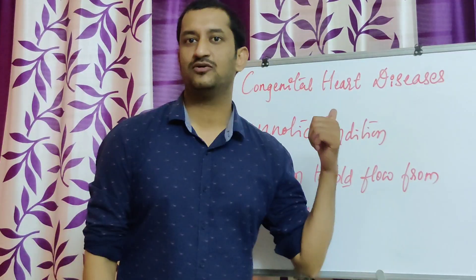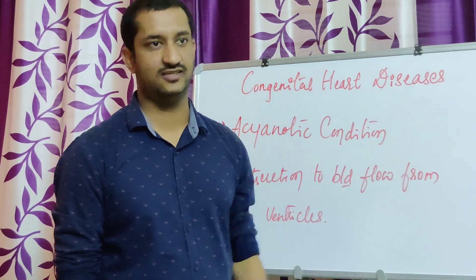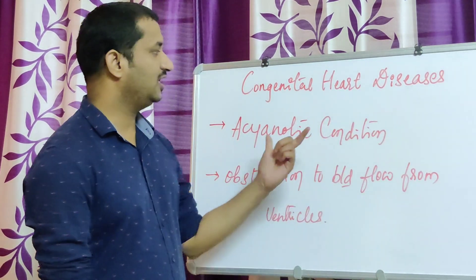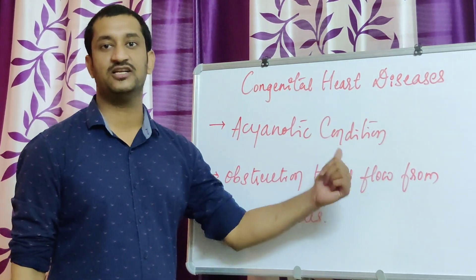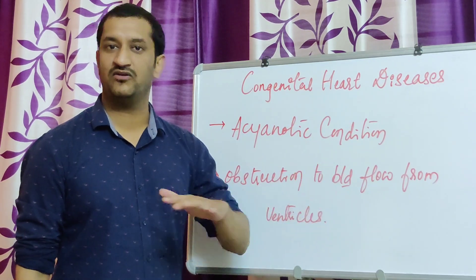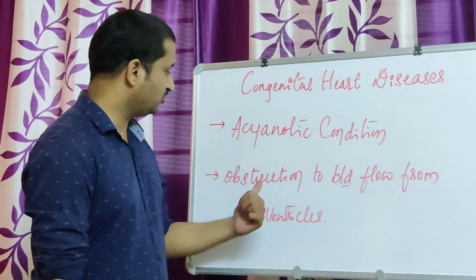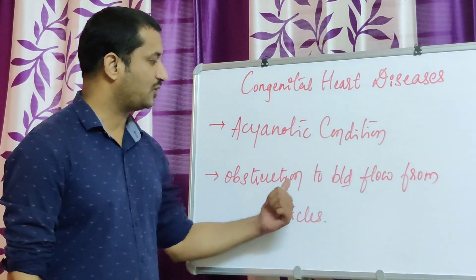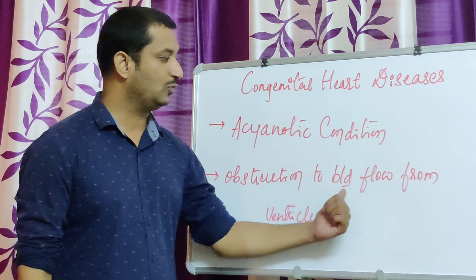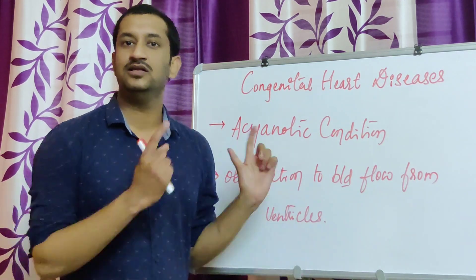Let's start with the congenital heart disease series. As earlier we have seen related to the acyanotic condition. Under that, increased pulmonary blood flow, I have completed. Next, moving towards the obstruction to blood flow from the ventricle.